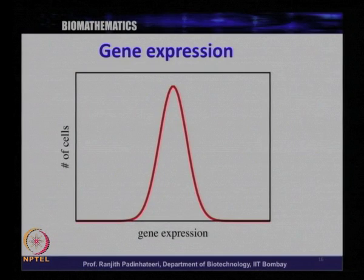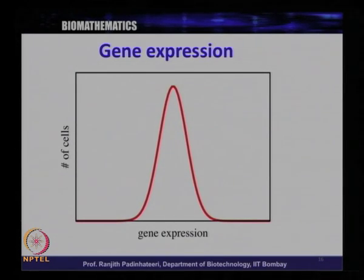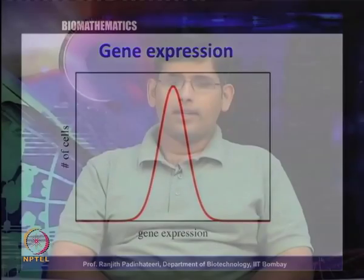The next case is gene expression. You have a lot of cells and for each cell you are measuring how much a particular gene is being expressed. Take the example of yeast cells and a gal gene, or any particular favorite gene. Some cells will have a lot of gene expression, some other cells will have only very little. So there is some variability — some cells will have a lot of gene expressed, some cells will have less.